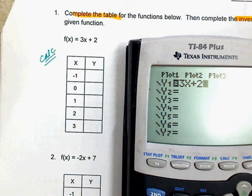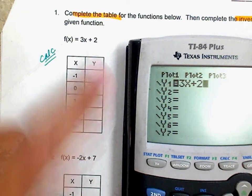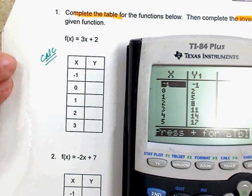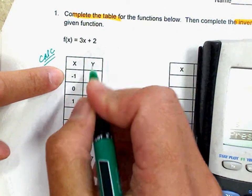Alright, so number one, go to your calculator, type this in, second table. Do you guys see a table? Match it up. When x is negative one, what's your y?